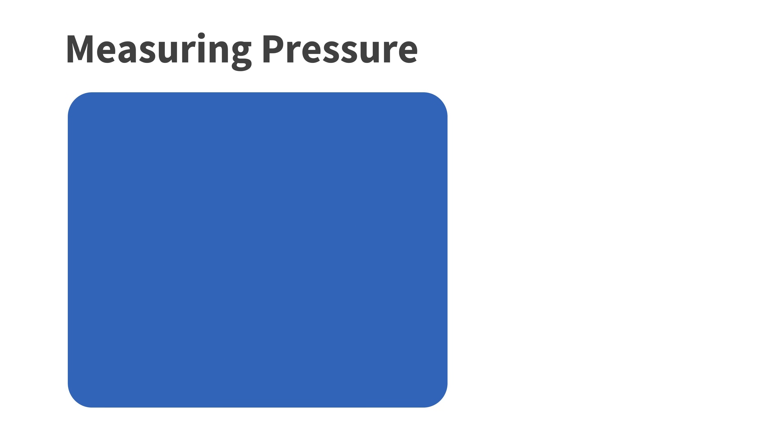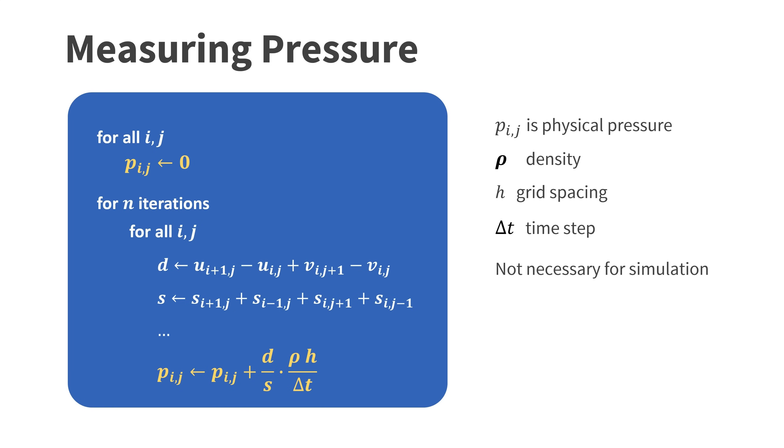When running a fluid simulation we are typically interested in the pressure distribution inside the domain. To compute the pressure we store a scalar pressure value inside each cell. Before starting the iterations we set it to zero. Then after projection of each cell we update the pressure value with this equation. Here rho is the density of the fluid, h the grid spacing and delta t the time step size. Computing the pressure just provides additional information and it is not necessary to run the simulation.